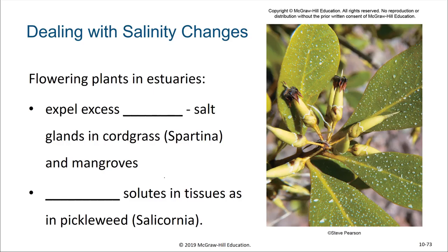Estuaries aren't just about the organisms living in the water but also those living adjacent to it. There are many flowering plants in estuaries and they often contribute a large amount to the productivity of these environments. Some have special mechanisms to deal with the salty water — they can expel excess solutes, such as the salt glands in the cordgrass Spartina and also many mangroves. The photo here shows a mangrove which secretes a solute-rich solution onto its leaves, and as the water evaporates you can see the salt crystals left behind. Some flowering plants actually concentrate the solutes in certain organs, such as the pickleweed Salicornia.